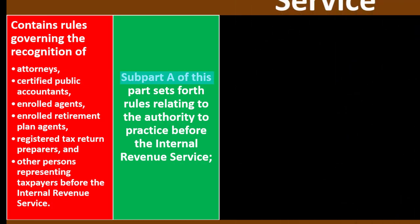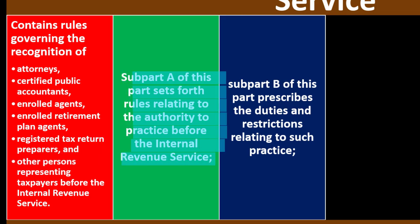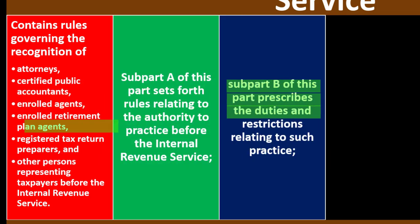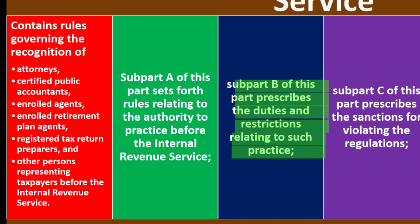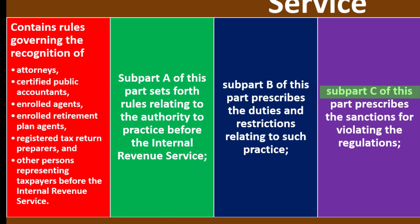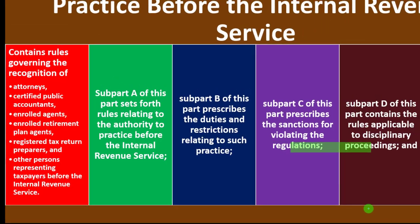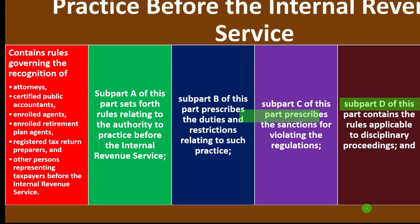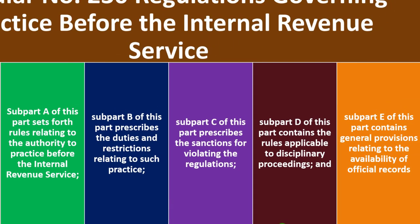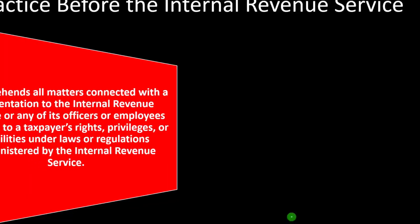Subpart A sets forth rules relating to the authority to practice before the IRS. Subpart B prescribes the duties and restrictions relating to such practice. Subpart C prescribes sanctions for violating the regulations. Subpart D contains the rules applicable to disciplinary proceedings. And Subpart E contains general provisions relating to the availability of official records.